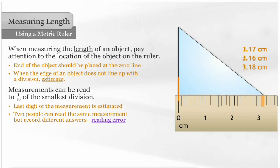The measurement 3.17 centimeters has three significant figures. The 3 and the 1 are read directly from the ruler, so those digits are certain. However, the 7 is estimated, so it is uncertain but still significant.